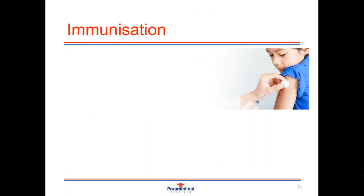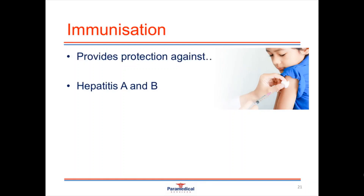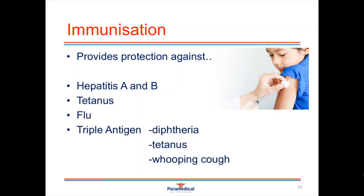Immunizations also help protect you against many of the pathogens you'll come into contact with as a healthcare provider. These include vaccinations against hepatitis A and B, tetanus, the flu virus, and the triple antigen which protects against diphtheria, tetanus and whooping cough. Depending on where you work, your organization may require some or all of these to ensure you can work safely in your environment.